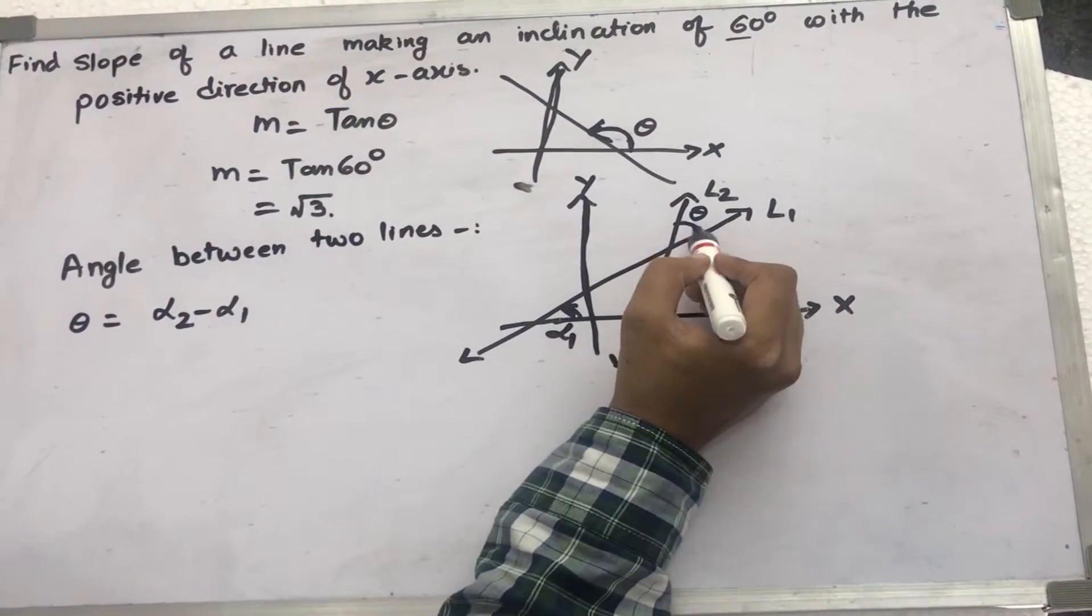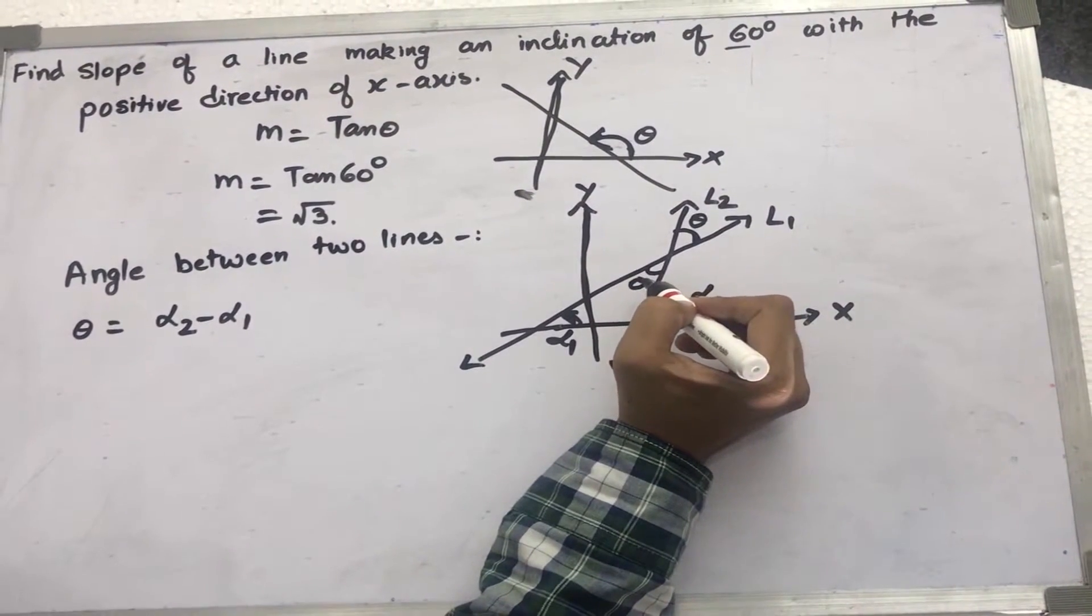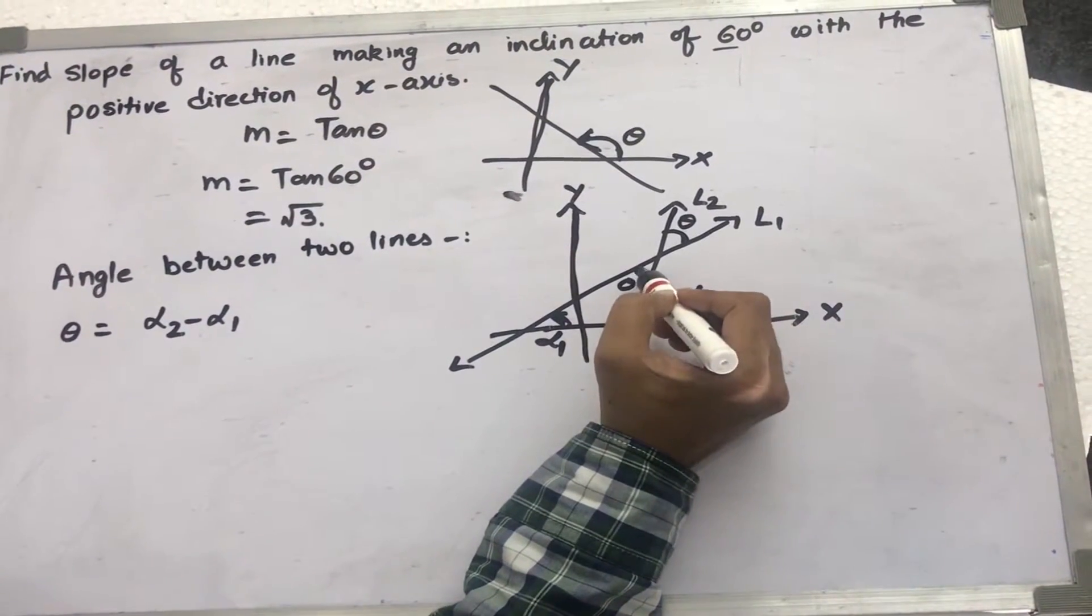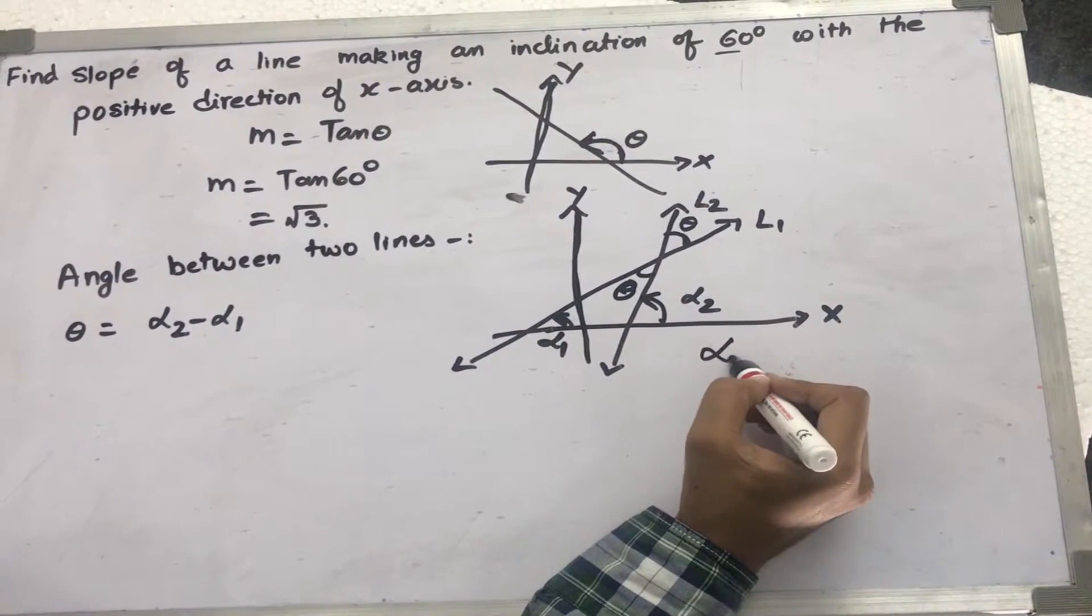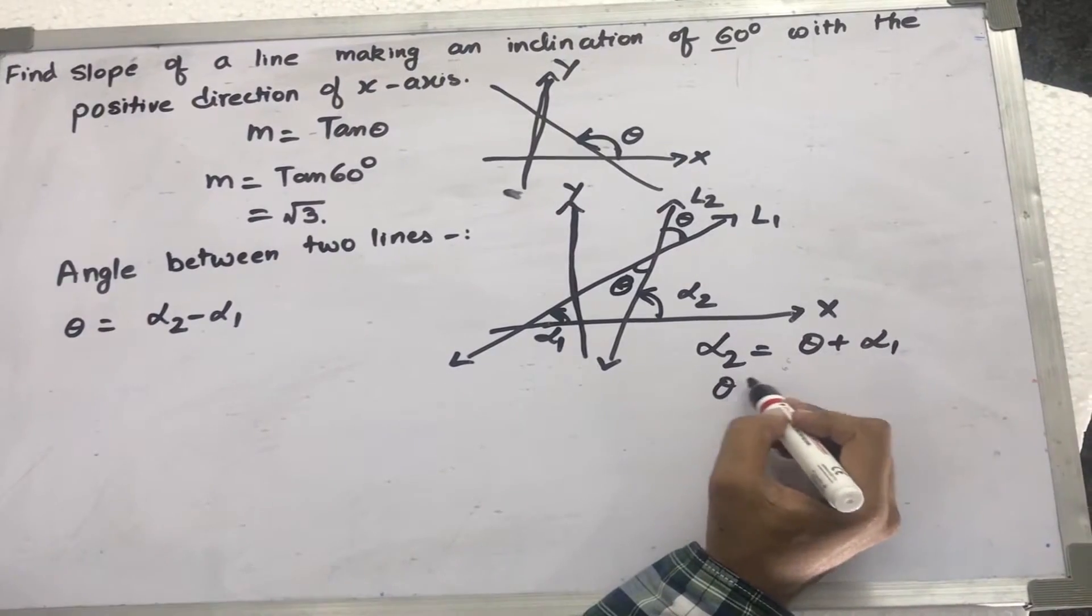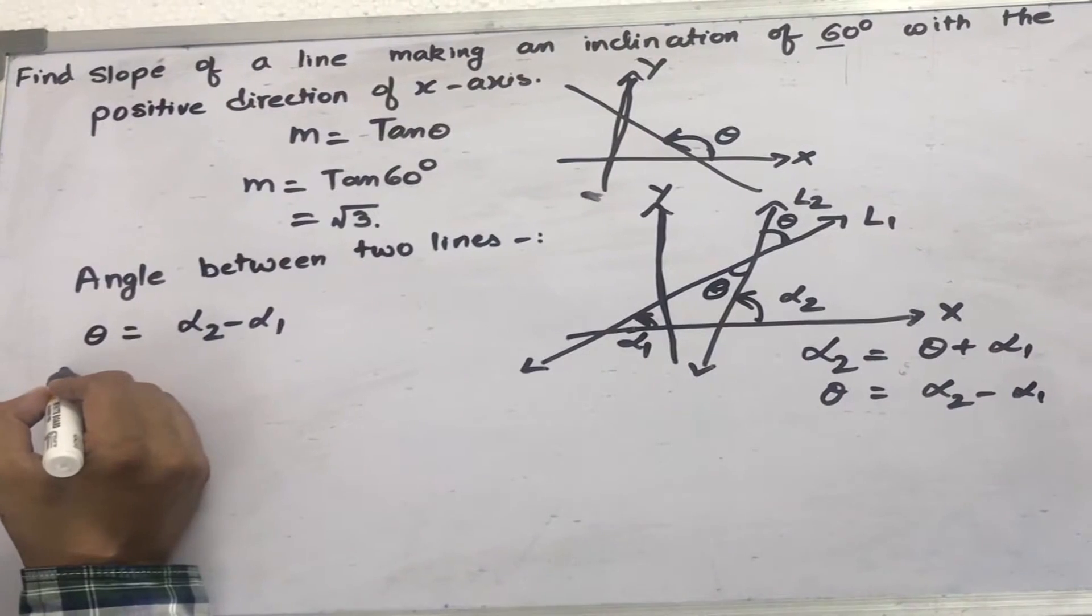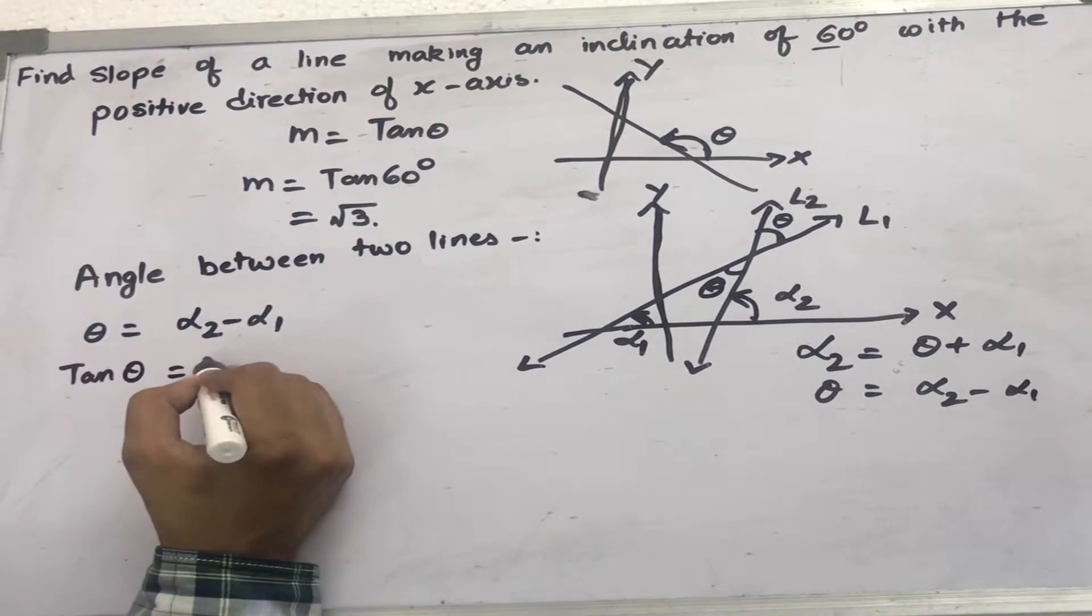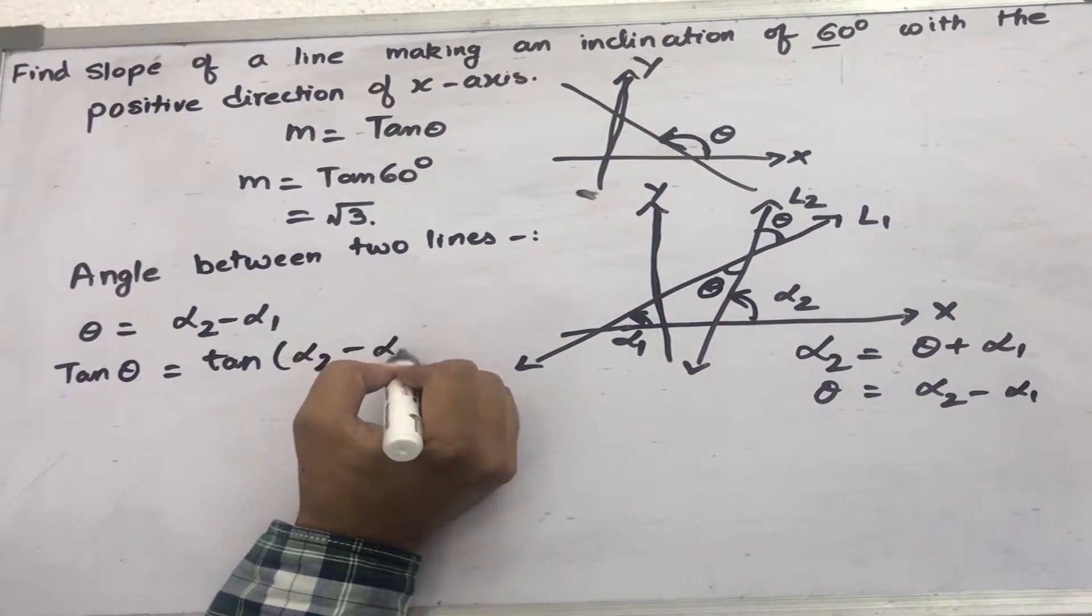How did we get this? If this is theta, this is also theta because of vertically opposite angles. Now, an exterior angle is equal to the sum of interior opposite angles. So here alpha 2 is equal to theta plus alpha 1. Therefore, theta equals alpha 2 minus alpha 1. So I can write this as tan theta equals tan of alpha 2 minus alpha 1.